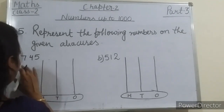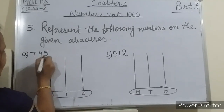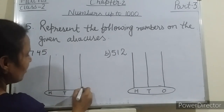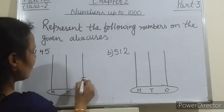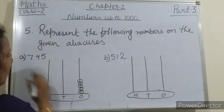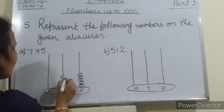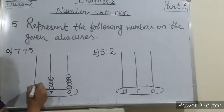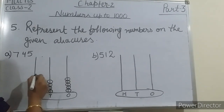So see students, how will you write here. So 745 — at the ones place, 5 is there, so here we will draw 5 beads: 1, 2, 3, 4, 5. And at the tens place, 4 — so here we will draw 4 beads: 1, 2, 3, 4. And here at the hundreds place, yes very good — 7 beads we have to draw: 1, 2, 3, 4, 5, 6, 7.